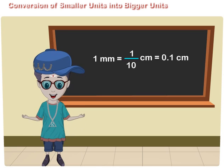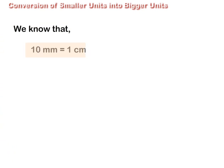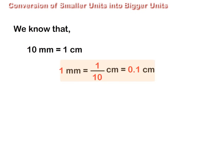Conversion of smaller units into bigger units. We know that 10 mm is equal to 1 cm. Therefore, 1 mm is equal to 1 upon 10 cm, which is equal to 0.1 cm. Similarly, 5 mm is equal to 5 upon 10 cm, which is equal to 0.5 cm.